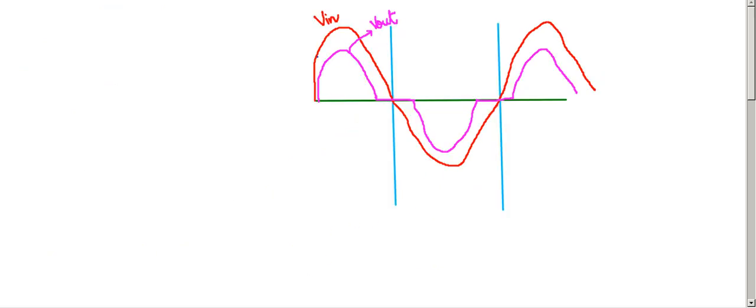We can see here, this is VIN, this is VOUT, and here is the distortion because of the dead zone. And this distortion is known as crossover distortion. This crossover distortion occurs in the presence of the dead zone.